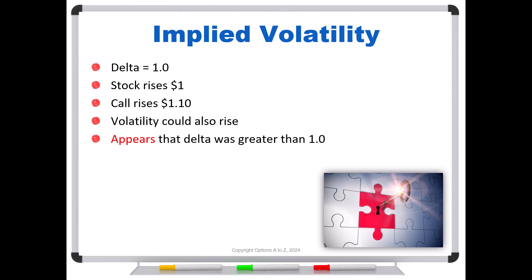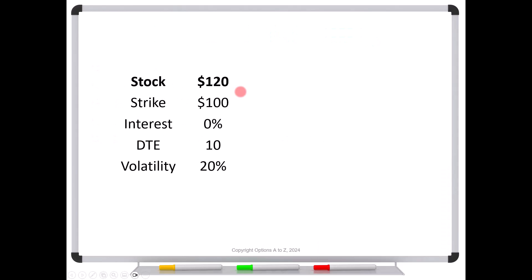So for example, let's go to a pricing model. Let's say the stock is 120. The strike is 100, interest rate zero, 10 days to expiration, volatility of 20%. And the pricing model, let's say shows the $100 call trading for 20 bucks, it's trading at parity, and therefore has a delta of one.